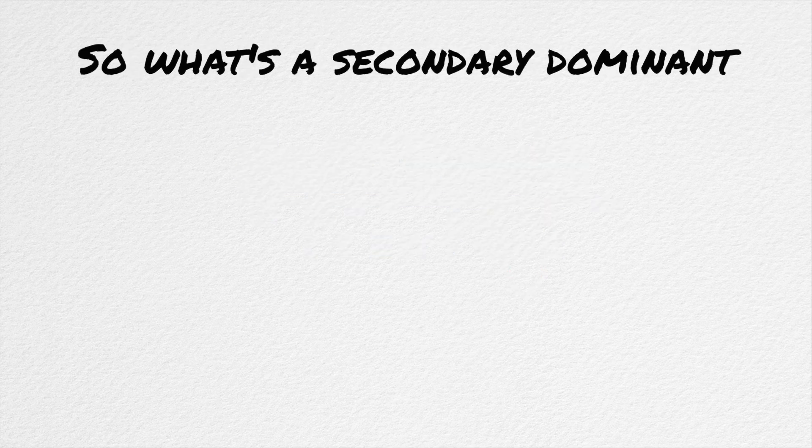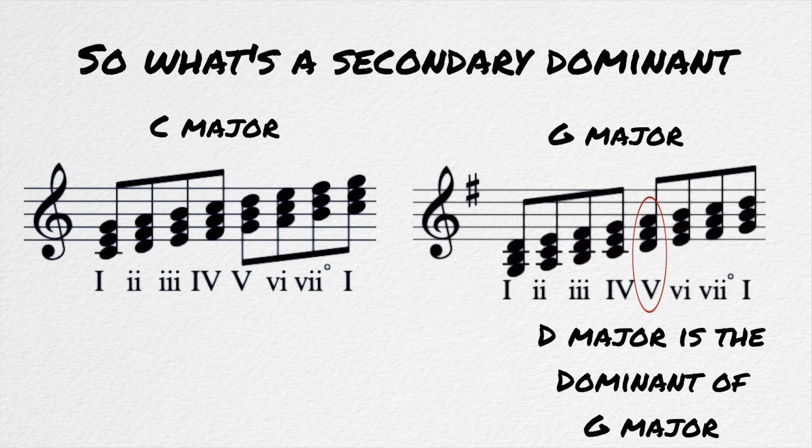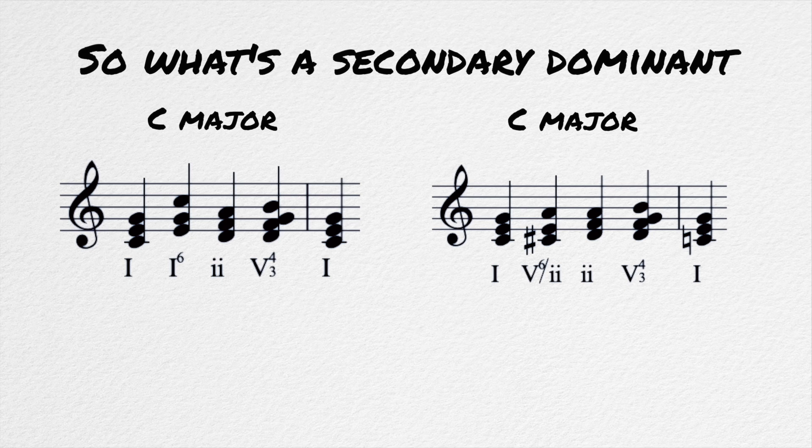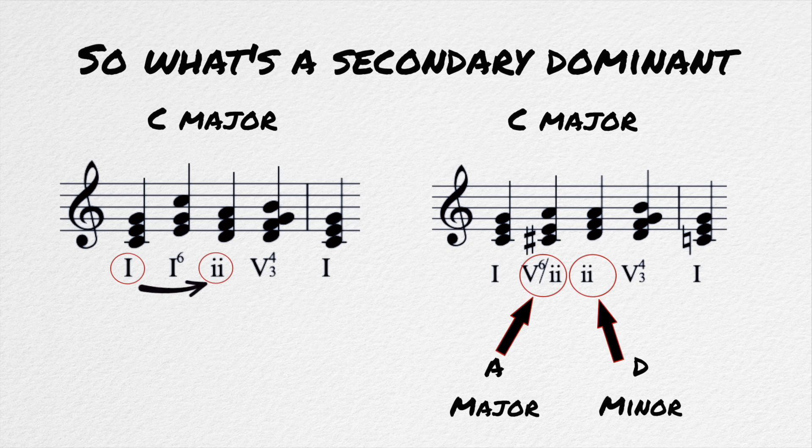So then what is a secondary dominant? A secondary dominant is a chord that is taken from outside the key that points towards a chord that is not the tonic. For example, let's say we're in the key of C and we want to move to the two chord, D minor. But instead of going straight there, we really want to draw the ear in that direction. We could set up a dominant chord of that D minor to help us get there. In this case, it would be an A7 chord, and it would be written the V7 of two.